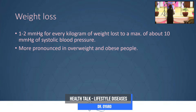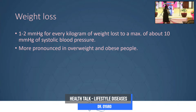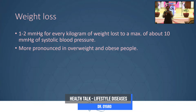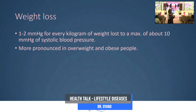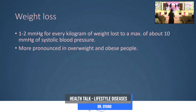Weight loss benefits both diabetes and hypertension. A study showed that for every kilogram of weight lost, blood pressure reduces by 1–2 mmHg. Losing 10 kg could reduce blood pressure from 130 to 120, or even from 140 to 120 — moving you from one stage of hypertension to a better stage. This effect is most pronounced in people who are overweight or obese.